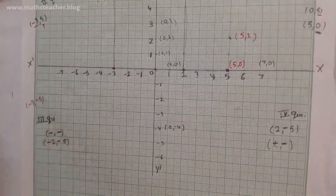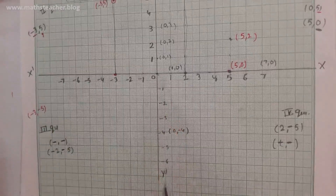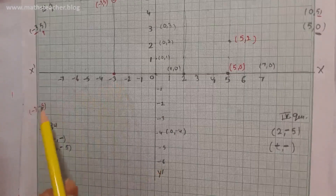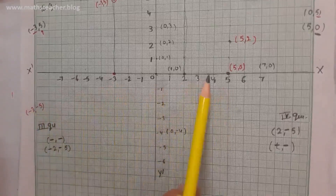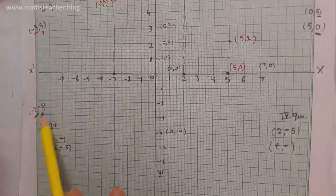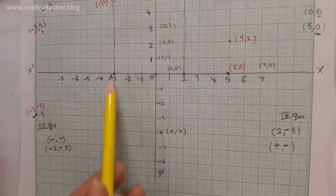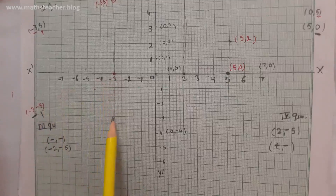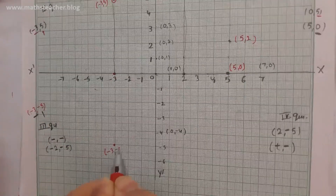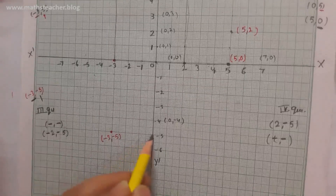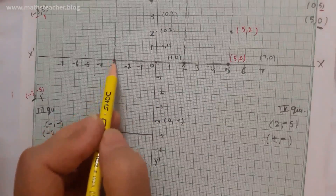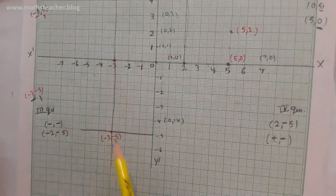Next, (-3, -5) — both negative. X is negative so we go to the left, and y is negative so we go downward. From the negative sign we know the direction. Go 1, 2, 3 steps left horizontally, then 1, 2, 3, 4, 5 steps down vertically. So our coordinate (-3, -5) is here. Using the second method: draw a parallel line from the y-axis point and a parallel line from the x-axis point — where they intersect is the coordinate.